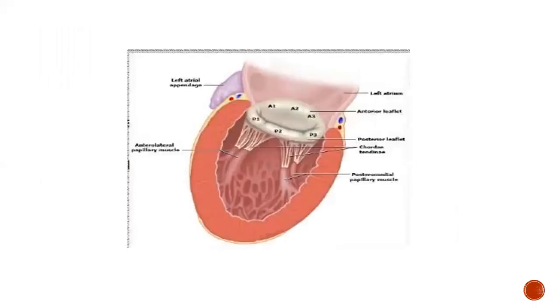This is the diagram of the normal mitral valve complex, showing the papillary muscles, the anterior mitral leaflet, posterior mitral leaflet, and the annulus.